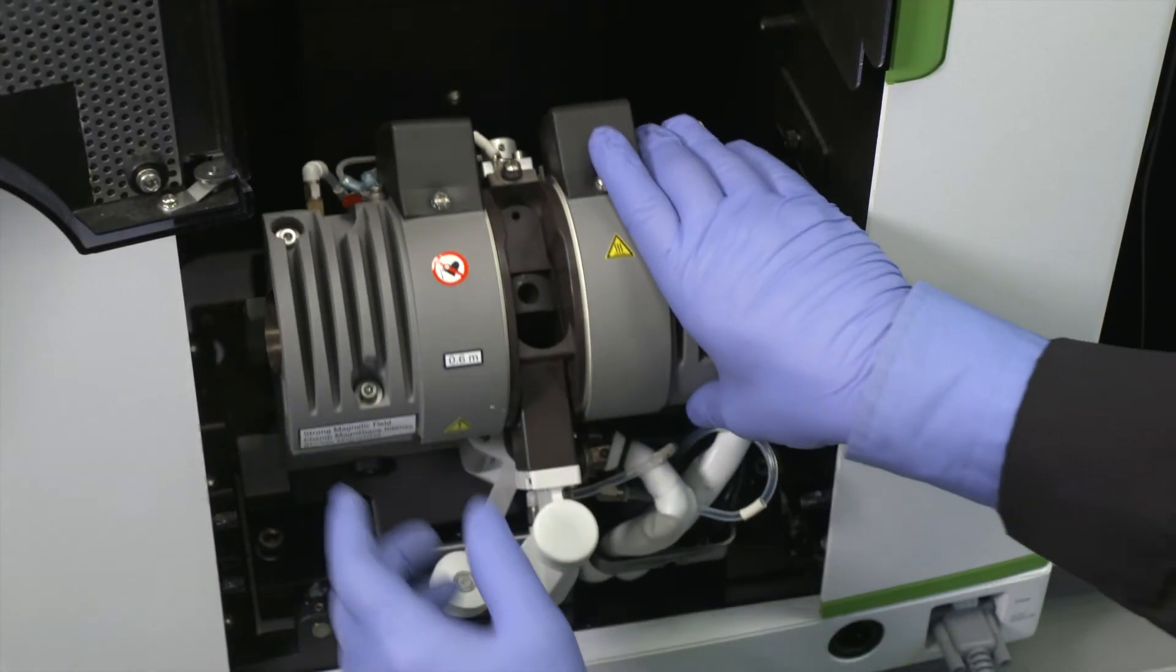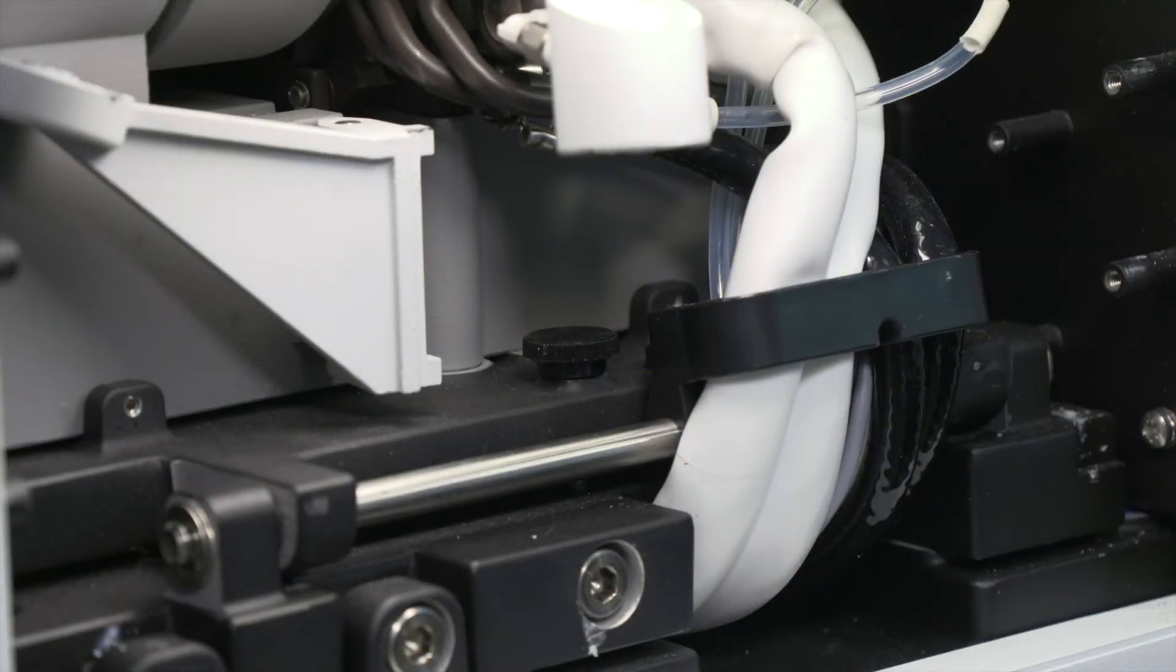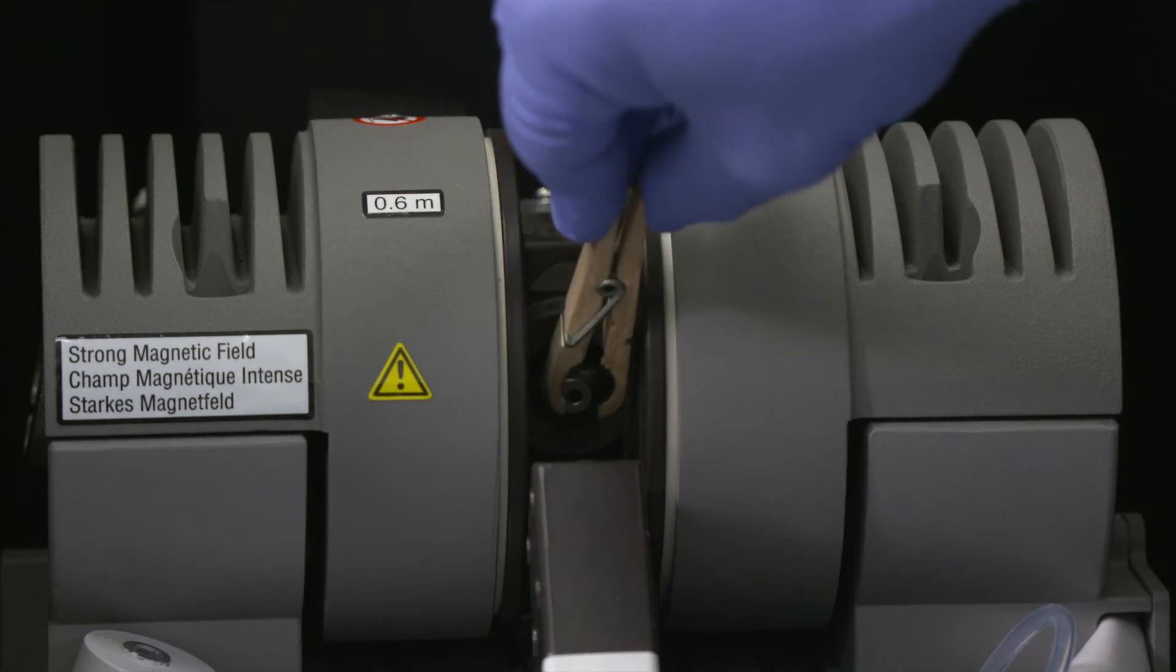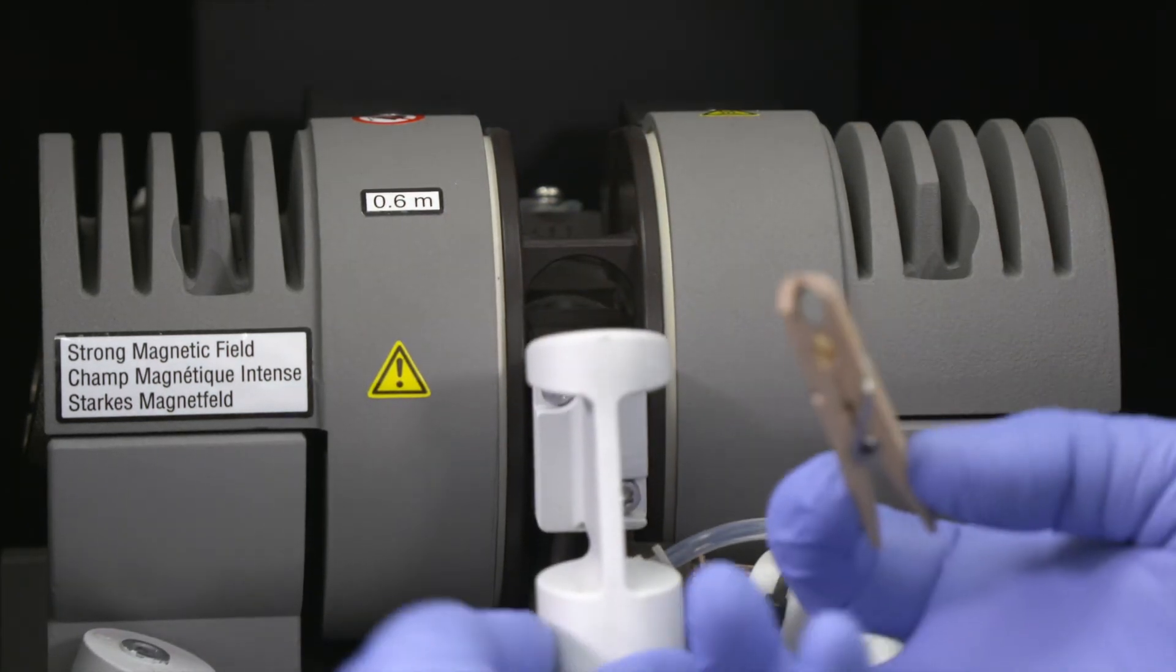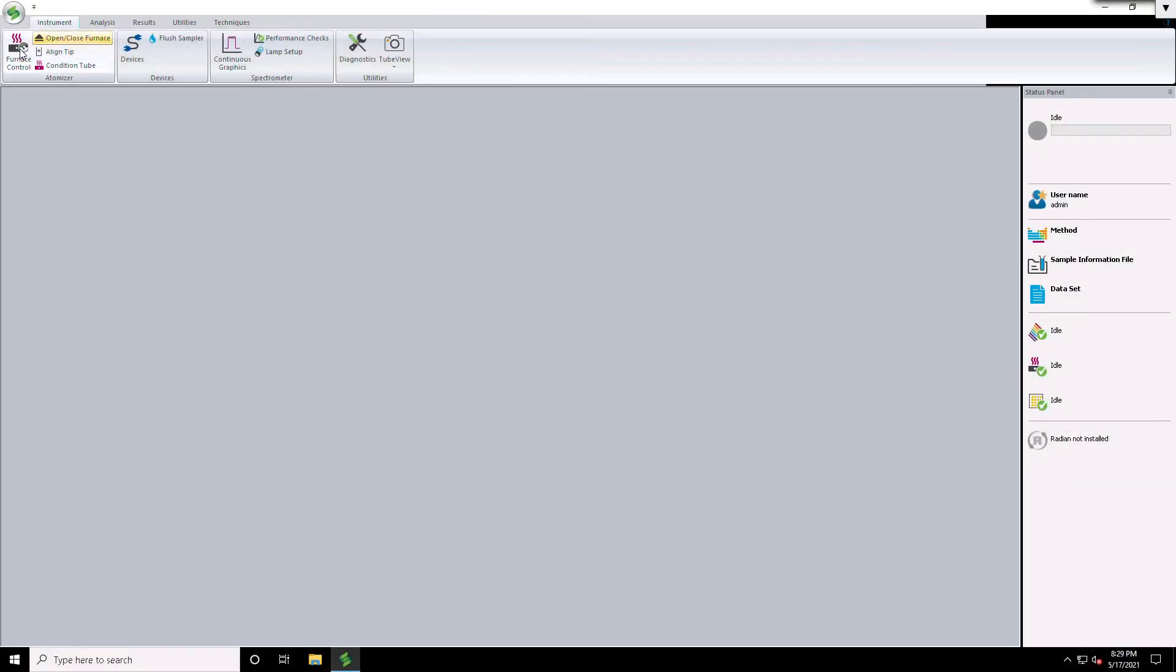Tilt the furnace back to the original position. Tighten the furnace locking screw to lock the furnace into place. Insert a graphite tube into the furnace. Close the front contact housing and swing the support lever under the contact housing. Now your contact cylinders have been replaced.